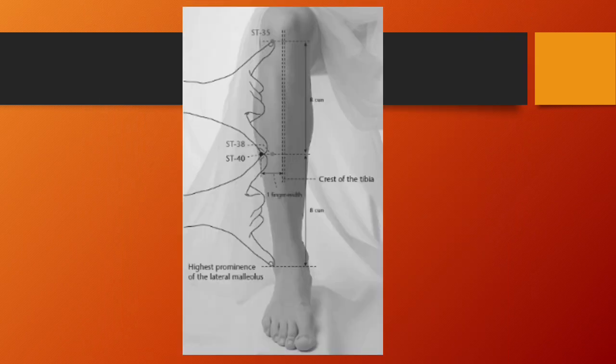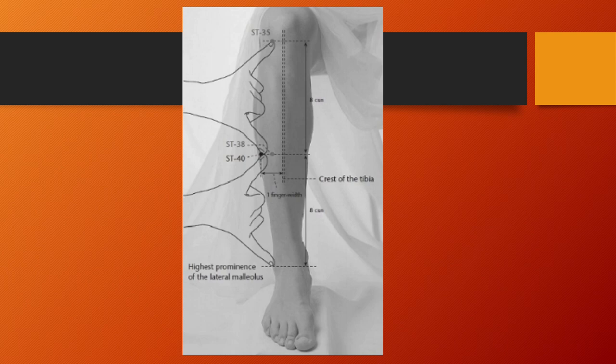Stomach 40, Fenglong or abundant bulge, is located on the anterior aspect of the lower leg, 8 tsun superior to the external malleolus, lateral to Stomach 38, two finger-breadths from the anterior crest of the tibia. Stomach 40 is the luo-connecting point of the stomach channel. Functions: transforms phlegm and dampness, calms the shen, clears phlegm from the heart, activates the meridian, stops pain. Stomach 40 is known as the phlegm point and helps resolve phlegm throughout the body. Needling: perpendicular insertion, 1 to 1.5 tsun.